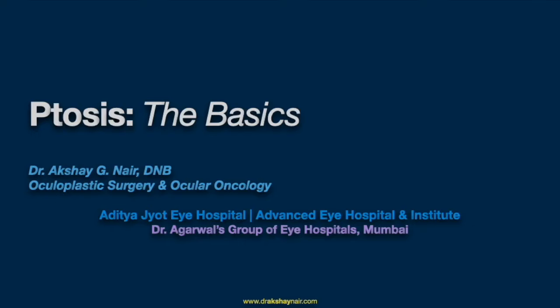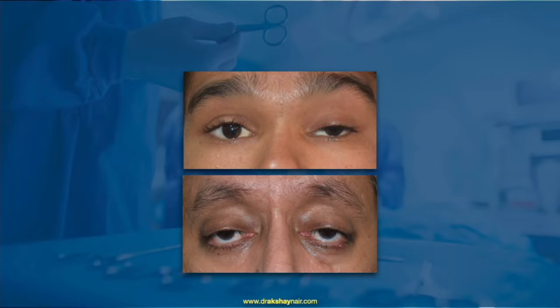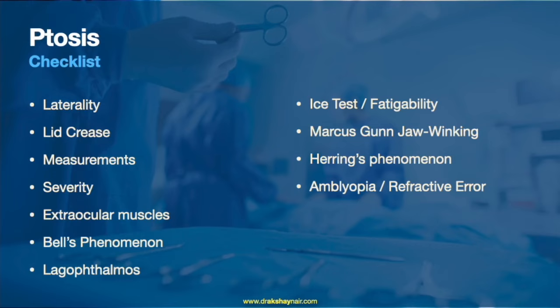Ptosis or blepharoptosis indicates drooping of the upper eyelid. This can either be unilateral or bilateral. While assessing a patient with ptosis, it is important to go through every aspect of its examination as is evident from this checklist.